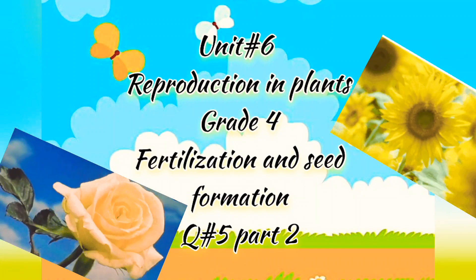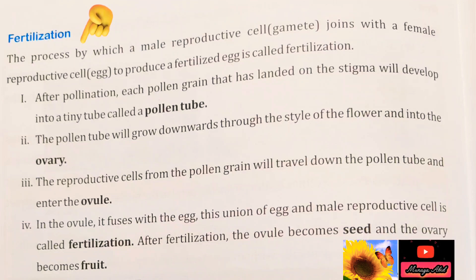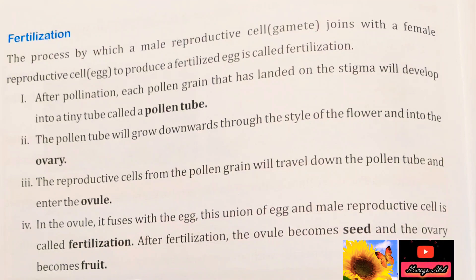Good morning and assalamu alaikum Grade 4. How are you all? Today we are going to do the most important topic of this chapter, and that is fertilization in flowers. The most important definition you have to learn: the process by which a male reproductive cell gamete joins with a female reproductive cell egg to produce a fertilized egg is called fertilization.